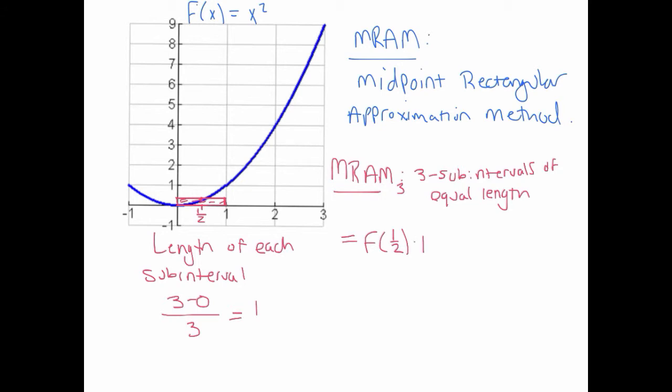The length of the base is one. On my next subinterval, I go to the midpoint of one and two, which is three-halves, and that determines the height of my rectangle. So that's adding f of three-halves times one.